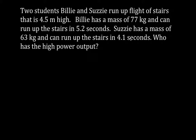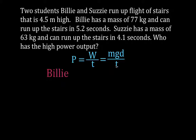We want to know who has a higher power output. All we're going to do is calculate the power output of each person and compare them. Remember, our power equation is that power equals work divided by time. We know their masses. We know g, the acceleration due to gravity, is a constant 9.81 meters per second squared. So we can calculate force times distance, which is work, divided by time. We'll calculate the power output first for Billy, then for Susie, applying the same equation for both.